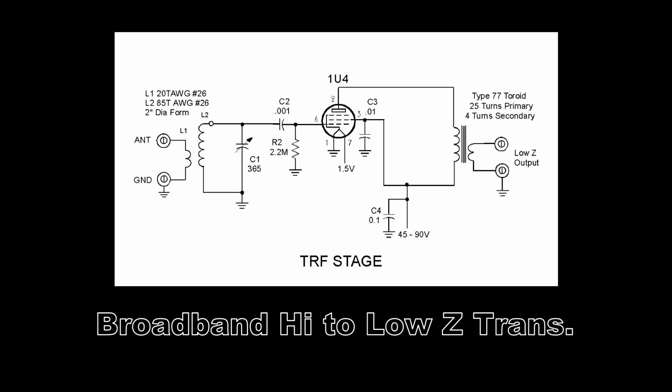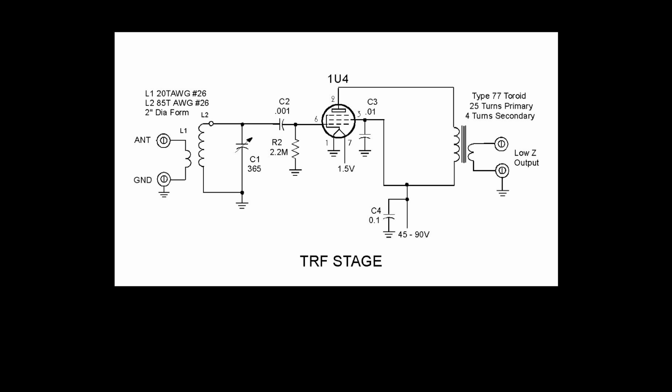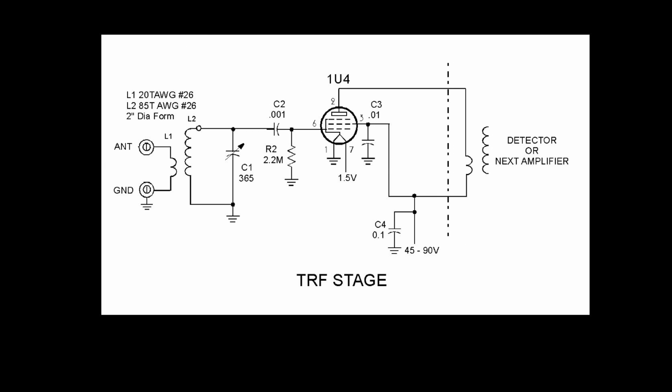Now you can use a transformer like I'm showing here, a broadband transformer, and it does work. But rather, if you can actually use the input length that you normally connect to the antenna and ground and actually run that from B plus to the plate, that solves a couple of problems for you. But you do have to put some B plus onto the primary of the tuned circuit of your crystal set or the grid leak detector in our case.